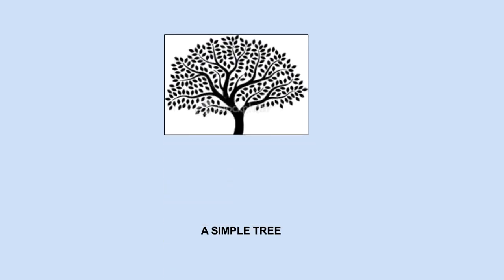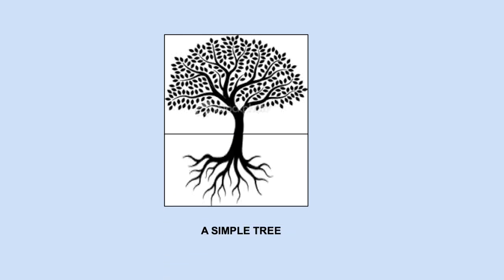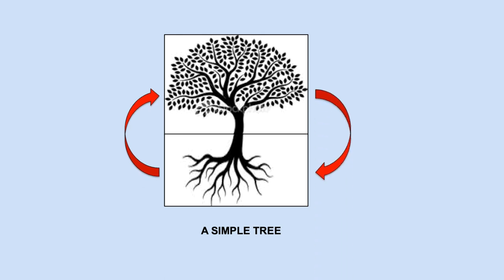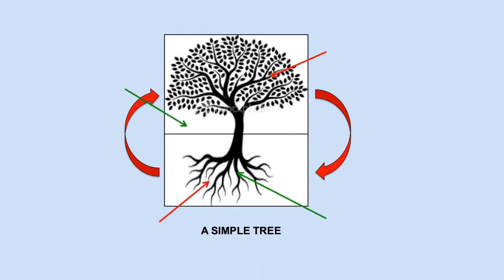As you know, a tree has two parts. One part is visible — the leaves and the branches — and the other part is invisible: the roots. Arborists, or tree specialists, tell us that these two parts are interdependent and interconnected. This means that what happens to one part of the tree affects the other part. For example, the health of the leaves and branches affects the health of the roots, and in the same way, the state of the roots impacts the health of the leaves and the branches.